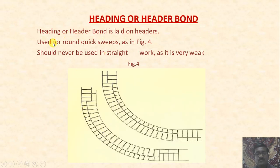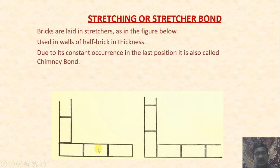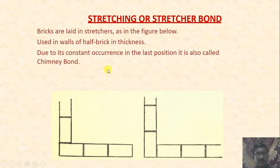Header bond, also called heading bond, is one in which all bricks are laid in the header fashion. It is used for round and curved sweeps and should never be used in straight work as it is very weak. Stretcher bond has all bricks placed as stretchers. It is generally used for partition walls in bungalows or apartments as it is a half-brick wall. Due to its constant occurrence in chimneys, it is also called chimney bond.